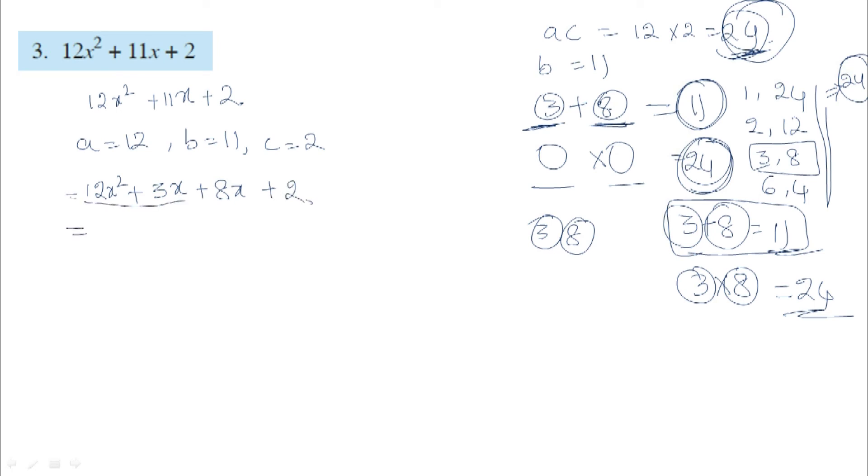From the first two terms, take 3x common: 3x into 4x is 12x², plus 3x into 1 is 3x. From the last 2 terms, take 2 common: 2 into 4x is 8x, plus 2 into 1 is 2.